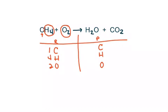And on my product side, I have two H's, I have one C. And now I have to be careful, because I have O's in two different places. I have this O, and I have these two O's, for a total of three O's.